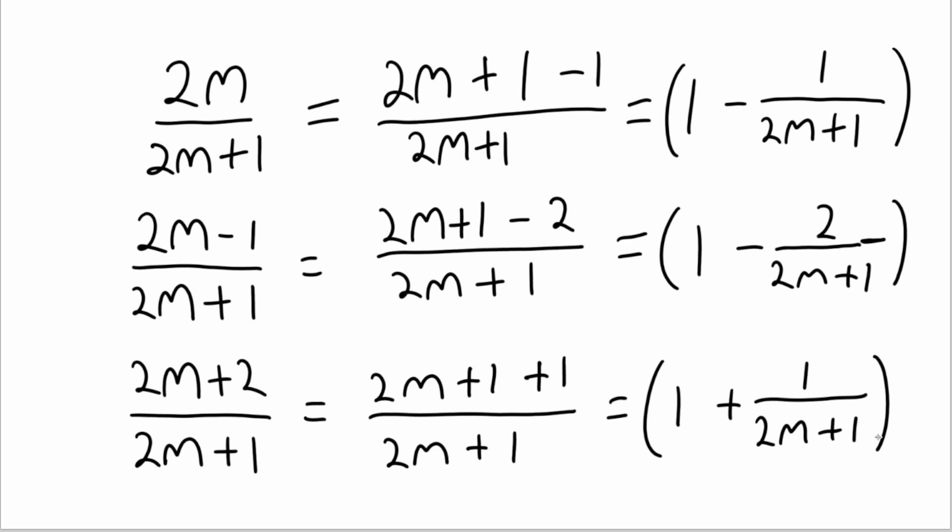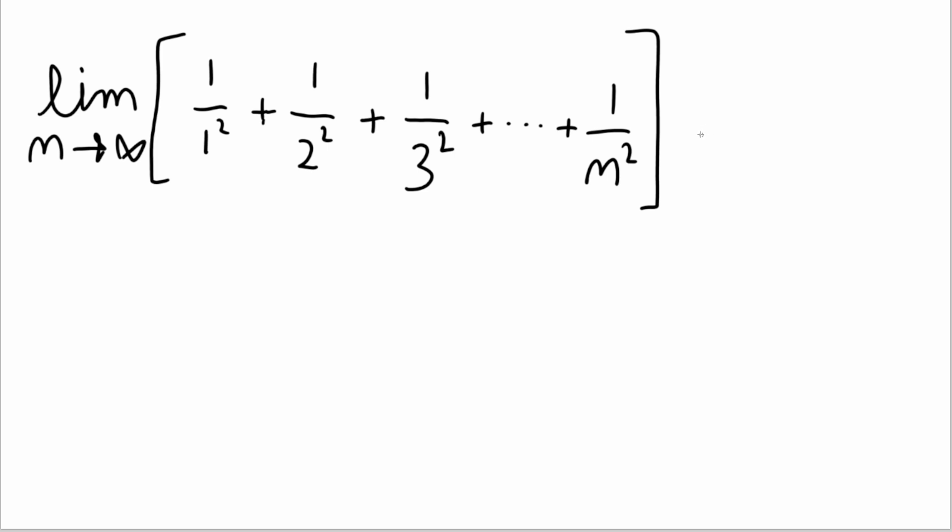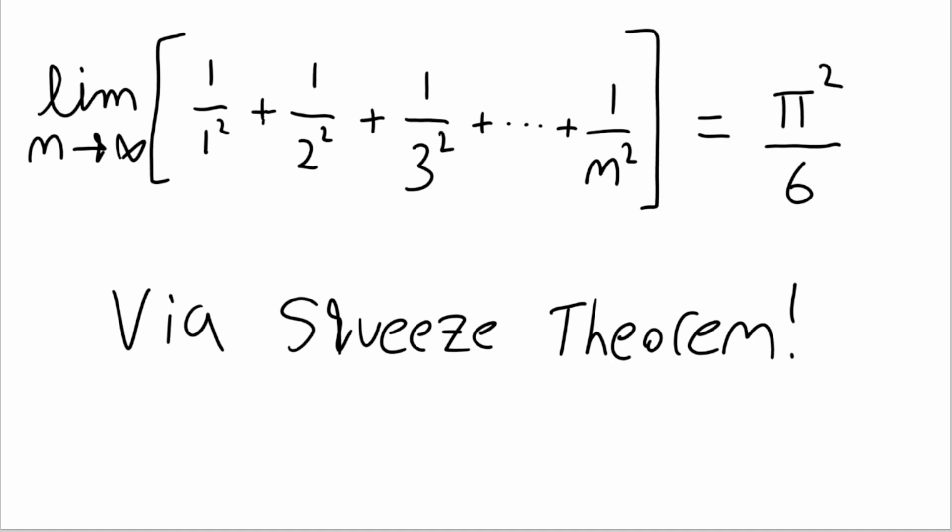You might be wondering why we went through all that trouble. Well, when I said it's more convenient in this form, I actually meant it's more convenient for taking a limit. See, to actually formalize this as an infinite sum, we have to take a limit as m tends towards infinity. And those fractional parts, with constants in the numerator and 2m plus 1 in the denominator, tend towards 0 as m approaches infinity. Thus, the limit of the infinite sum of 1 over the square numbers goes to pi squared over 6. And out of all things, it ended up being the squeeze theorem that got us there in the end.